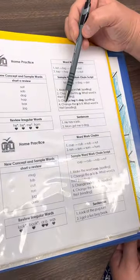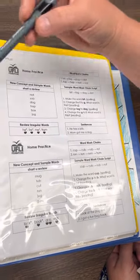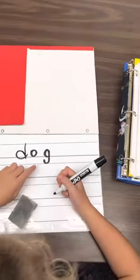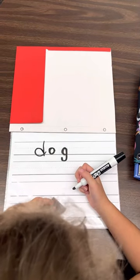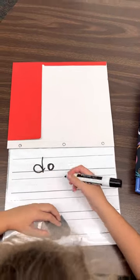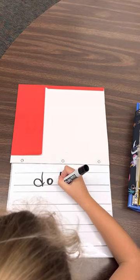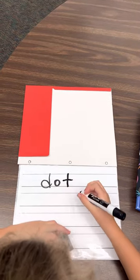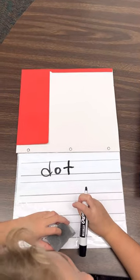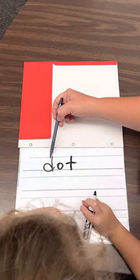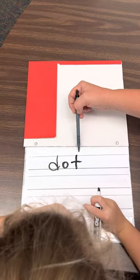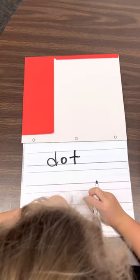Okay. Change the G. Point to the G. To T. What word is this? Dog. Good. Say the sounds. Dog. Dog. Good.